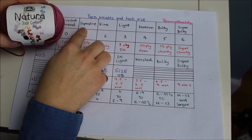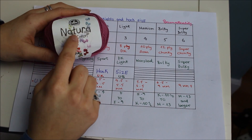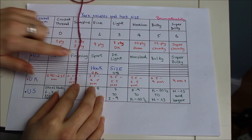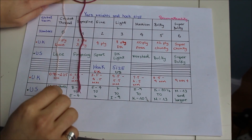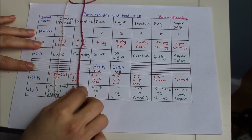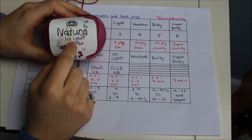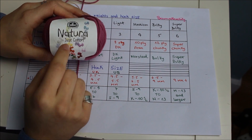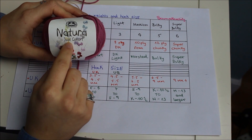For number 1, which is the superfine, I have this yarn here — which is the Natura Just Cotton. As you guys can see, this one is much thicker than number 0. This yarn is also amazing for bikinis — if you guys want a really good yarn to make bikinis, this one is a good option. You can buy this one from Hobbycraft.